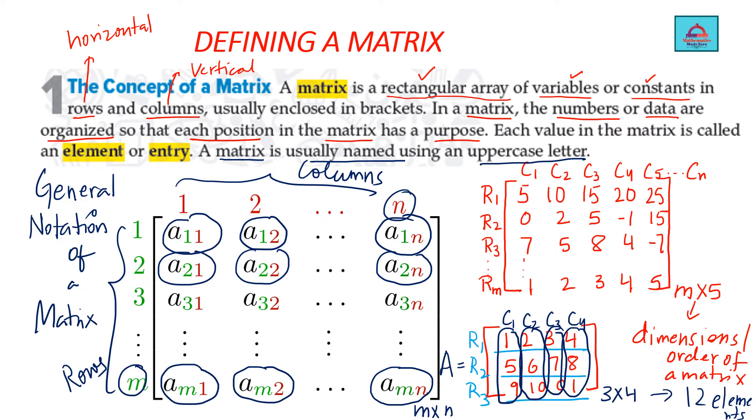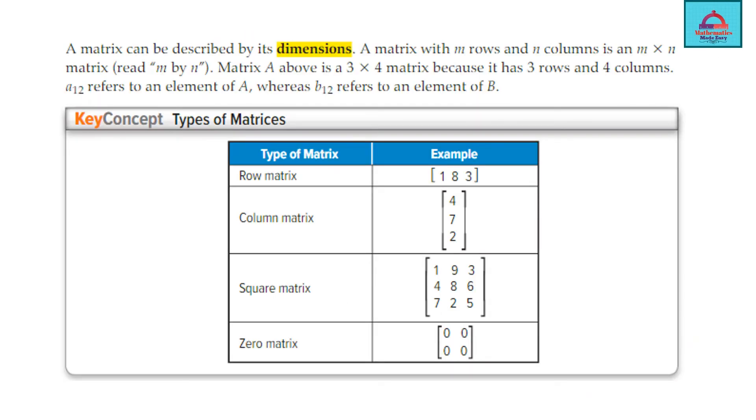How do you read the order or dimension? M cross n. That's how you count. And each value in the matrix is called element or entry. So if I ask you what is the element for this matrix A at 2, 3 position? So second row, third column. So 7. So I hope you understood the concept of a matrix.